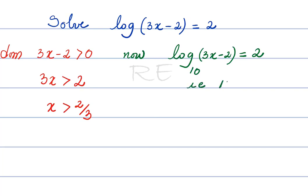In exponential form, the base 10 to the power 2 is equal to 3x minus 2.